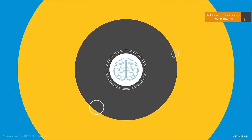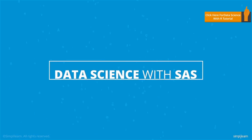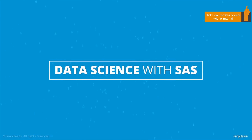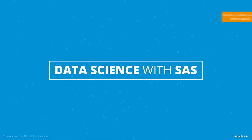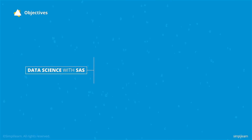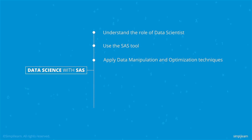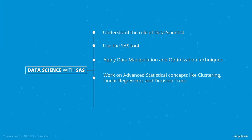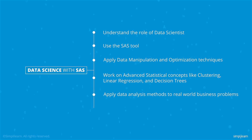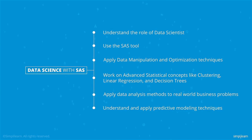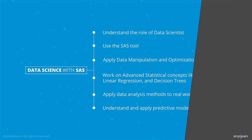If you are interested in the field of data science and analytics, this course is ideal for you. All you need is an analytical bent of mind — the rest is taken care of by the Data Science with SAS course. It covers the essentials of statistical techniques and basics of programming. The course will enable you to understand the role of a data scientist, use the SAS tool, apply data manipulation and optimization techniques, and work on advanced statistical concepts like clustering, linear regression, and decision trees, as well as apply data analysis methods to real-world business problems and predictive modeling techniques.